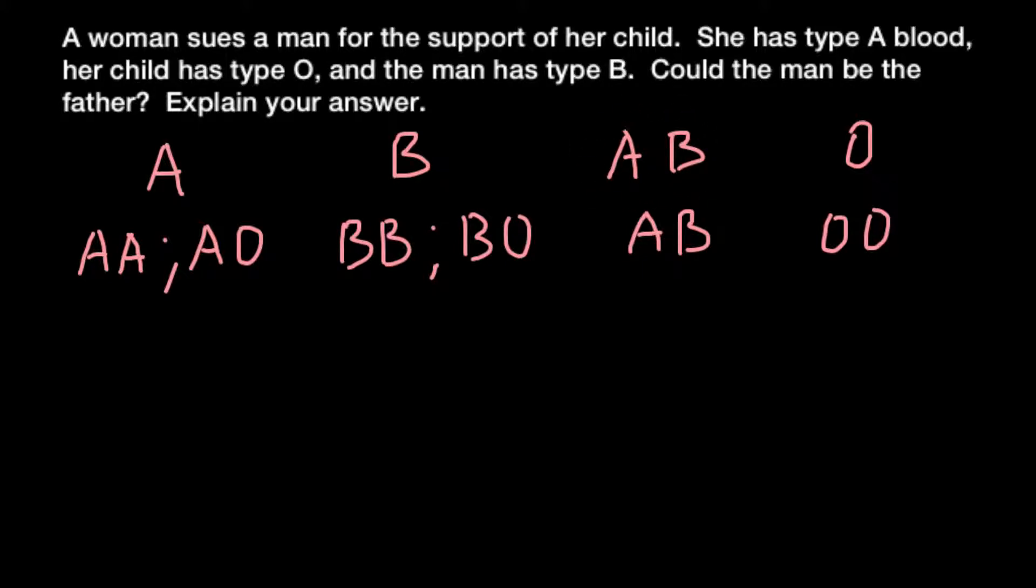And if, for example, allele A would be dominant over B, the blood group would be A, or vice versa.